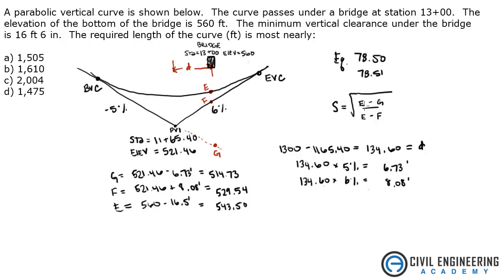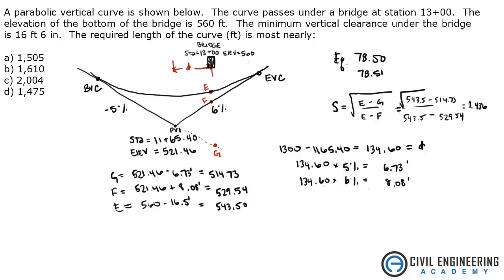Now we have all the elevations and can plug everything into the equation for S. So: the square root of (543.5 minus 514.73) divided by (543.5 minus 529.54). That gives an S value of 1.436.